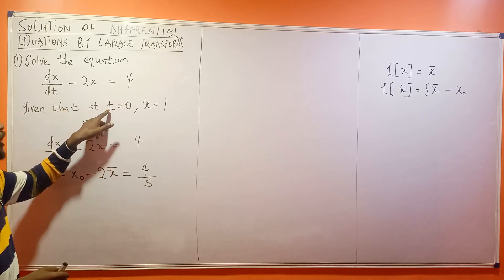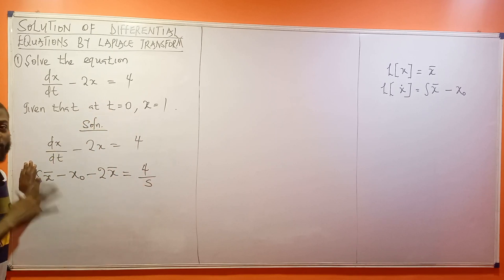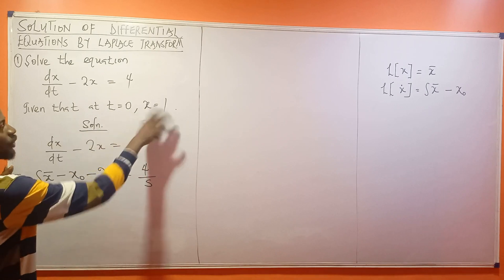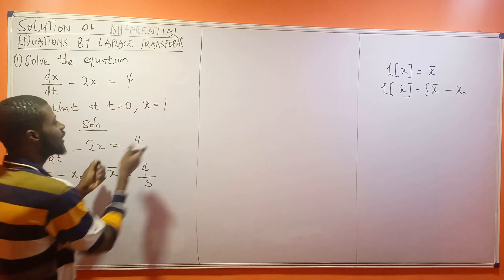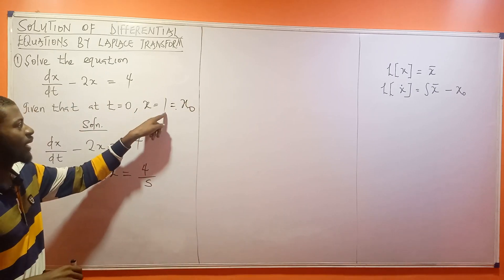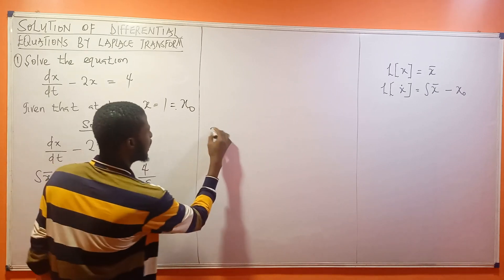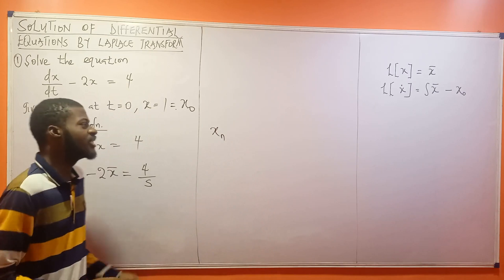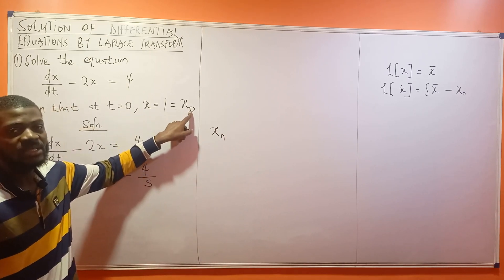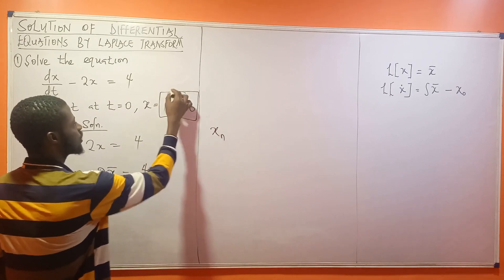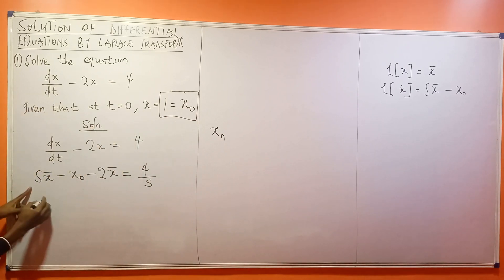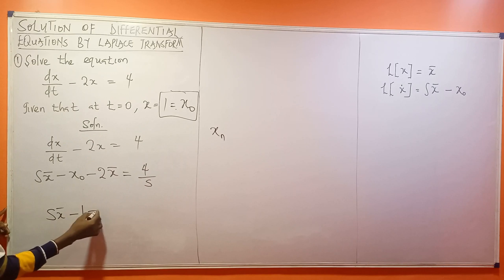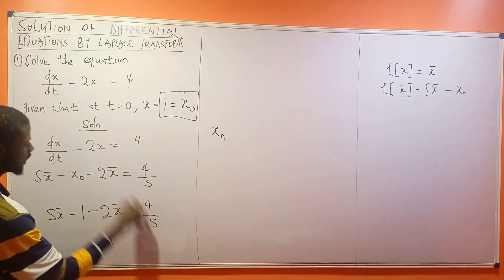Now look at our initial conditions. At T equal to 0, after writing in terms of Laplace, what you do next is to substitute your initial given conditions. At T equal to 0, S is equal to 1. Now remember, this S naught value of 1 means the value of S at T equal to 0. So S naught equals 1. This gives us: S times S bar minus 1 minus 2 S bar equal to 4 over S.